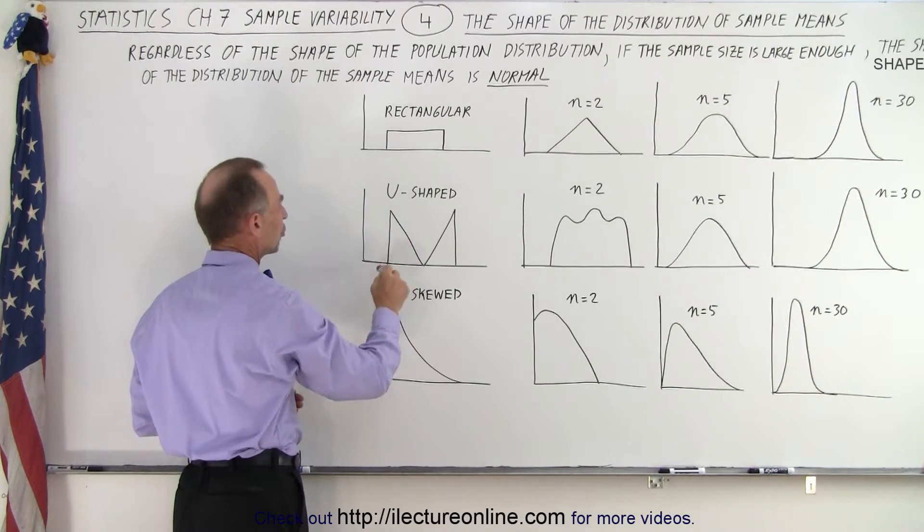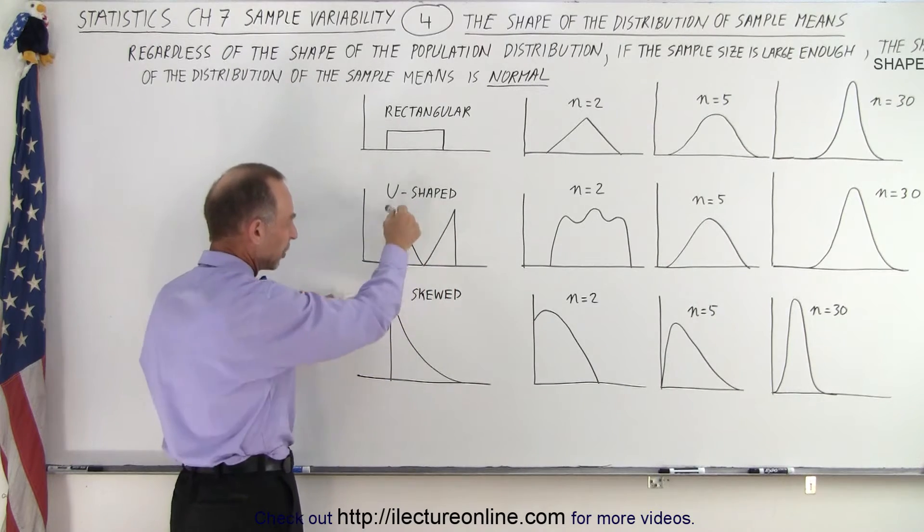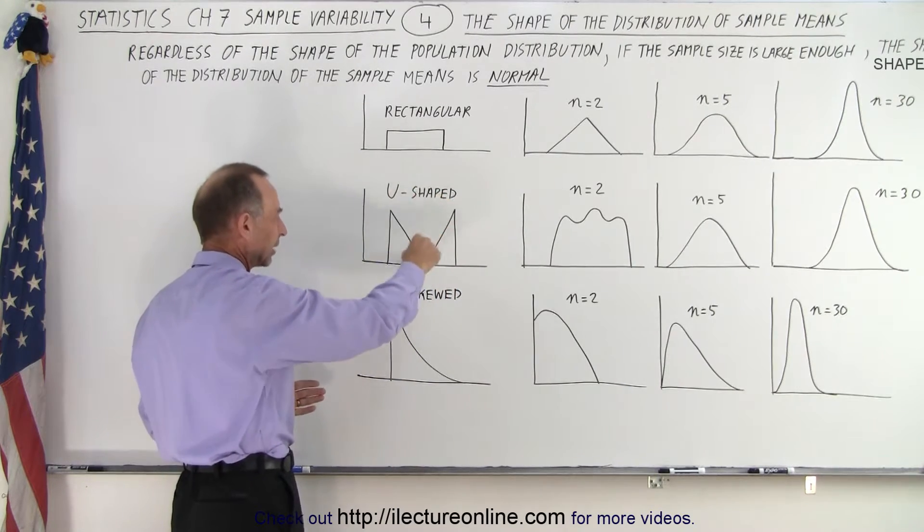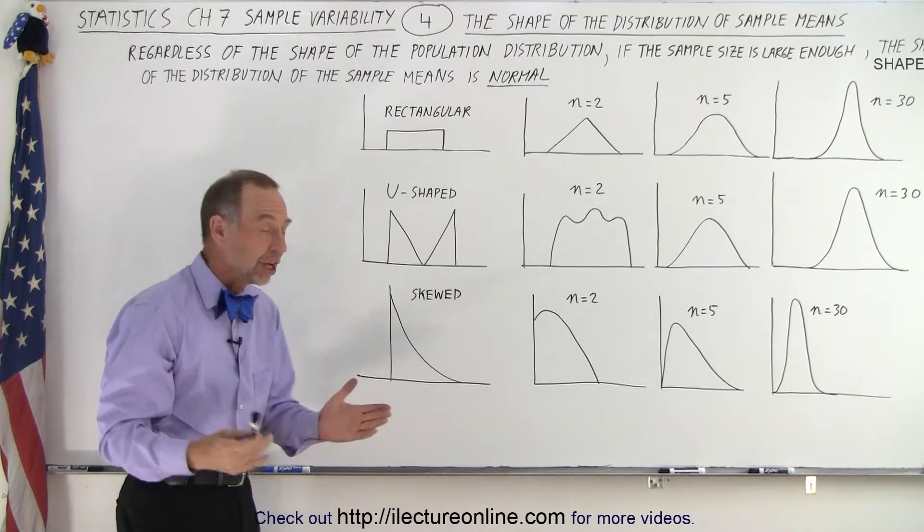We have a rectangular distribution, we have a U-shaped distribution. I know it looks like an M, but essentially you think about it like this, it's U-shaped, and maybe it's skewed or J-shaped.